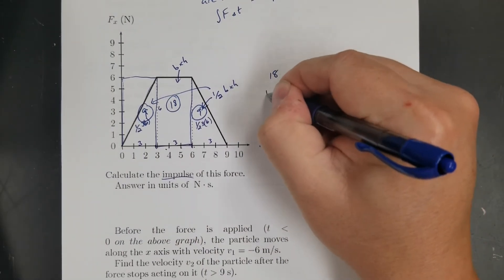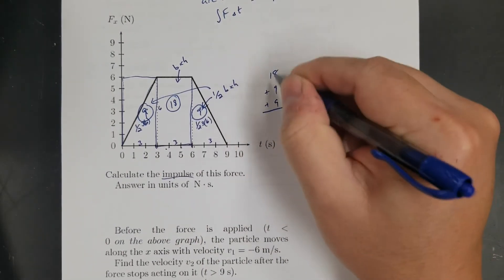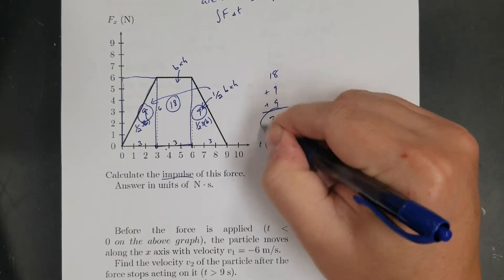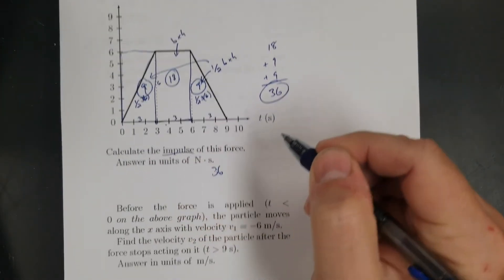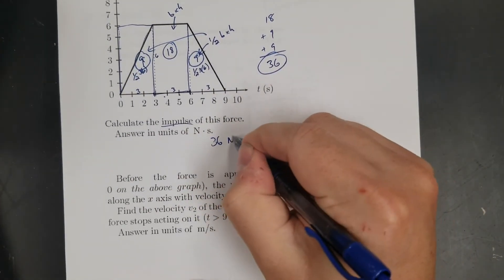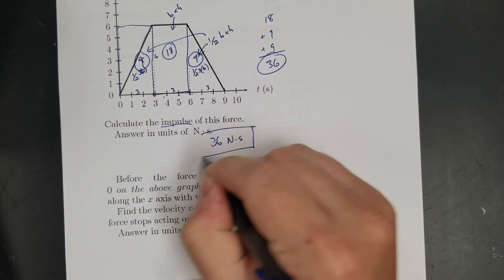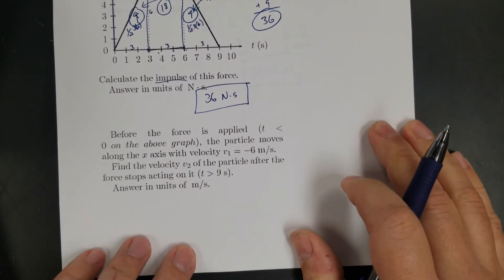Okay, so 18 plus nine plus nine, nine and nine is 18, 18 and 18 is 36. So 36 newton seconds. Easy peasy. Okay.